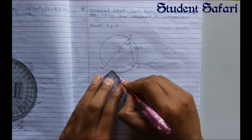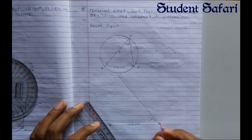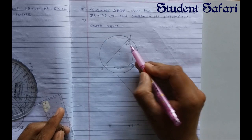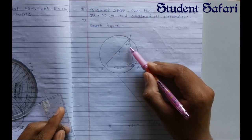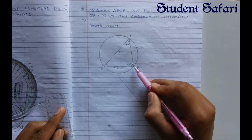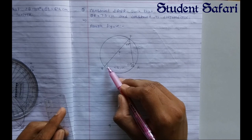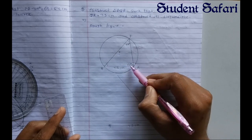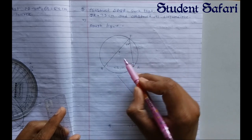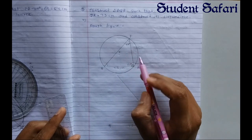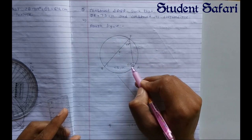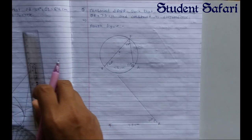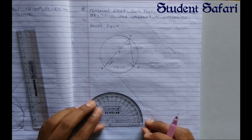Join R to this new point — this angle is our 50 degrees. We don't have the measurement of angle Q directly, but we have angle P equal to 70 degrees and angle R equal to 50 degrees. Since all angles of a triangle sum to 180 degrees: 70 plus 50 equals 120, and 180 minus 120 gives us angle Q equal to 60 degrees.